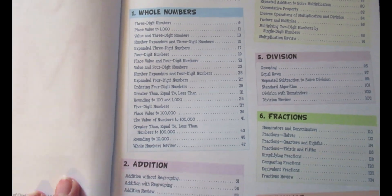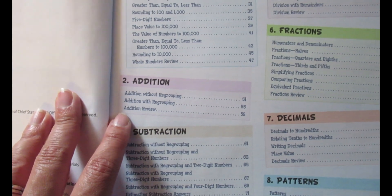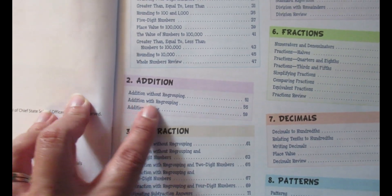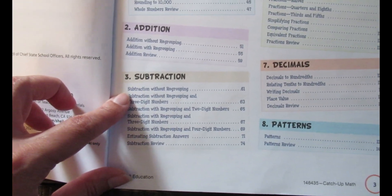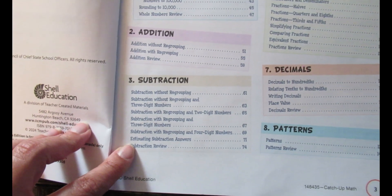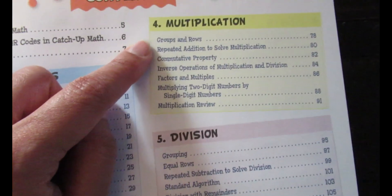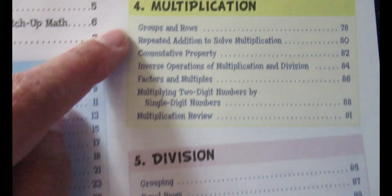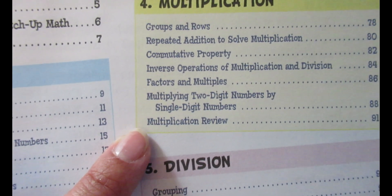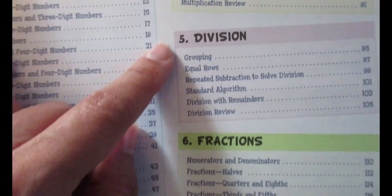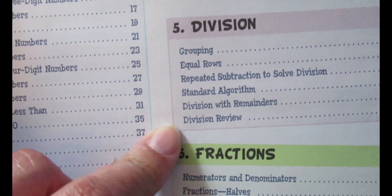Addition is addition without regrouping and addition with regrouping. Subtraction starts at subtraction without regrouping and ends at estimating subtraction answers, then a review. Multiplication ends at groups and rows and multiplying two-digit numbers by single-digit numbers and a review. Division starts at grouping, ends in division with remainders, and a review.